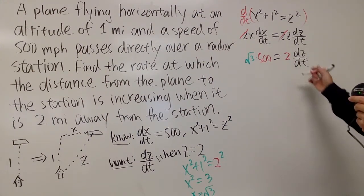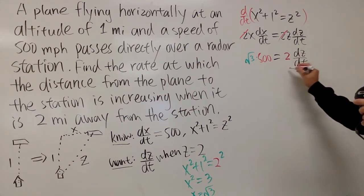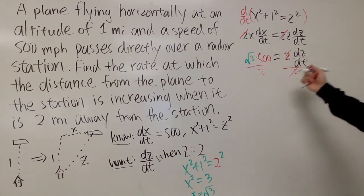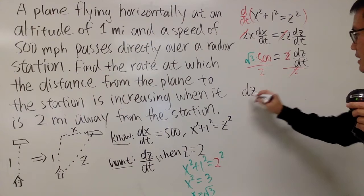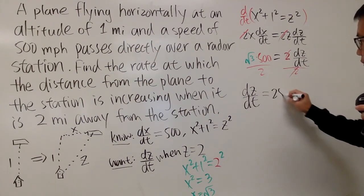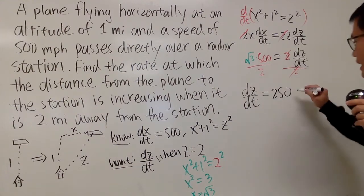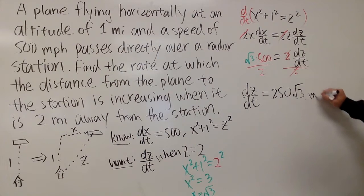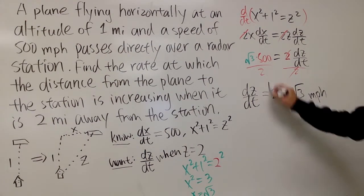Now have a look here. To get the dz/dt by itself, we can just divide the 2 on both sides. So we can say that dz/dt is equal to, reduce that, which is 250, and multiply by square root of 3. And don't forget, this is the speed. So this is miles per hour with the unit for that.